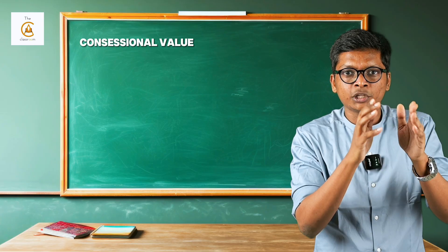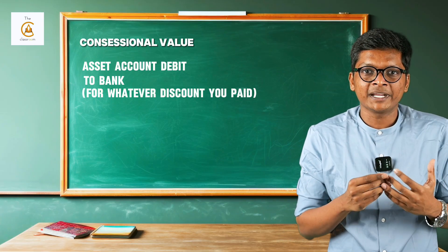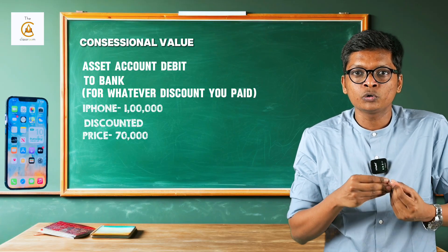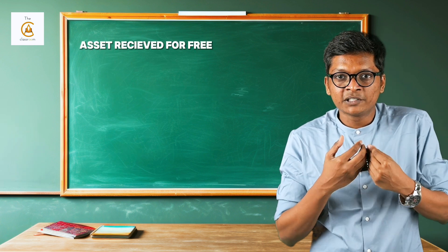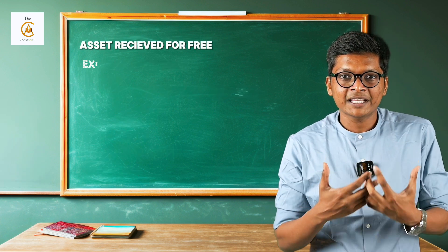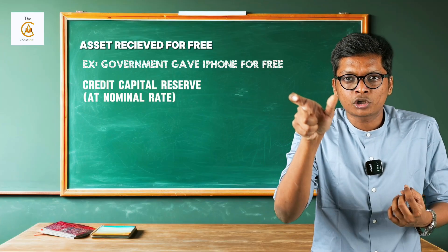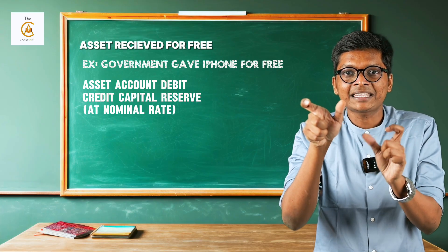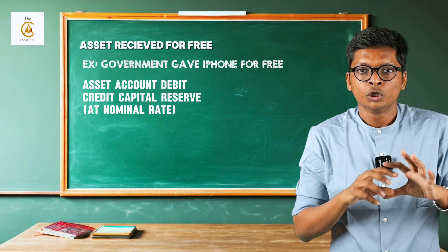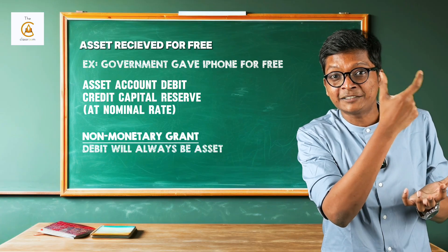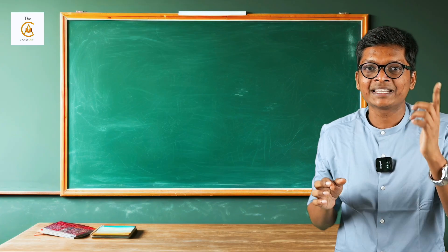For a grant received at concessional value, whatever asset you received, debit the asset account and credit bank for whatever amount you pay. For example, if an iPhone worth 1 lakh was given at a discount of 70,000, the entry will be: iPhone account debit to bank for 70,000. If the asset is received for free - say government gave an iPhone for free - the entry will be asset account debit, and instead of crediting bank, you credit capital reserve at a nominal value like 1, 10, or 100 rupees. So for non-monetary grants, debit will always be the asset.